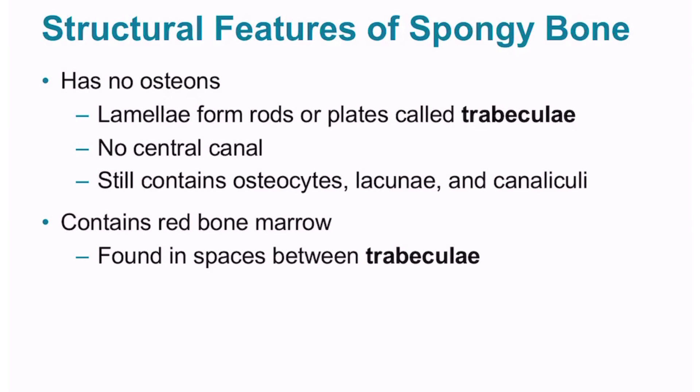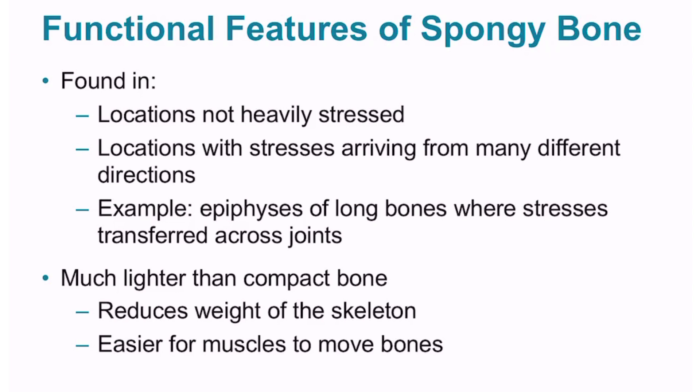Spongy bone, on the other hand, has no osteons and has a different arrangement of its lamellae. Its lamellae form rods or plates called trabeculae, and frequent branchings create an open network. Canaliculi from the lacunae of spongy bone end at exposed surfaces of the trabeculae, where nutrients and waste diffuse between the marrow and the osteocytes. In contrast to compact bone, spongy bone is found where bones are not heavily stressed or where stresses arrive from many directions. It is also much lighter, reducing the weight of the skeleton. The trabecular network supports and protects the cells of red bone marrow, where blood cells are formed.